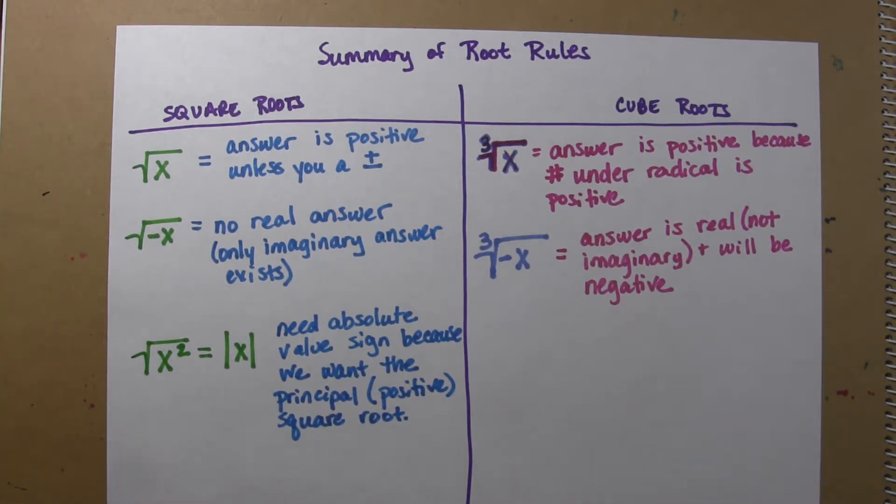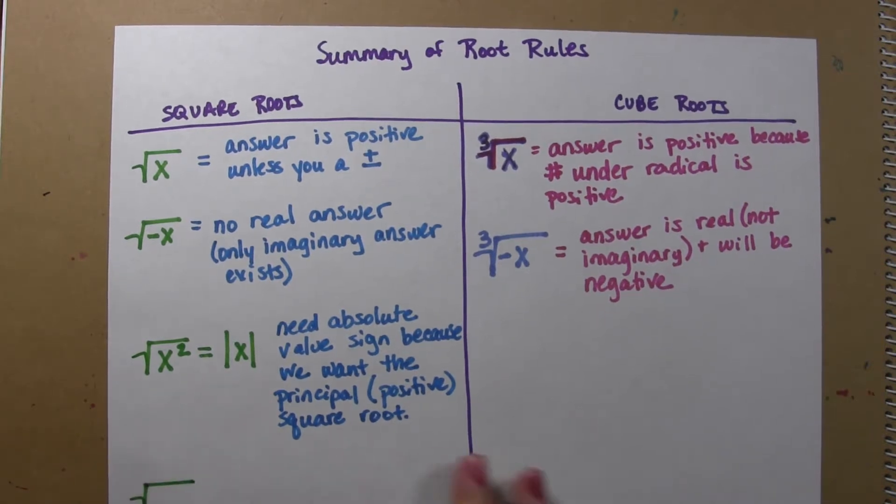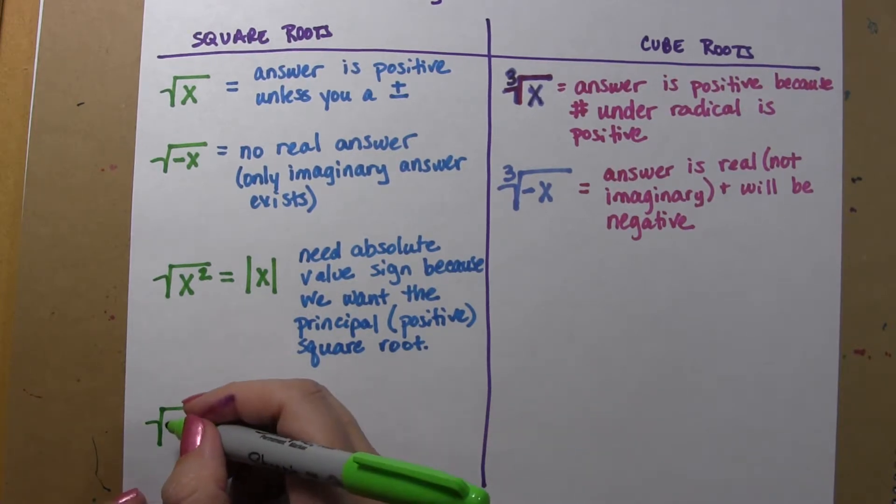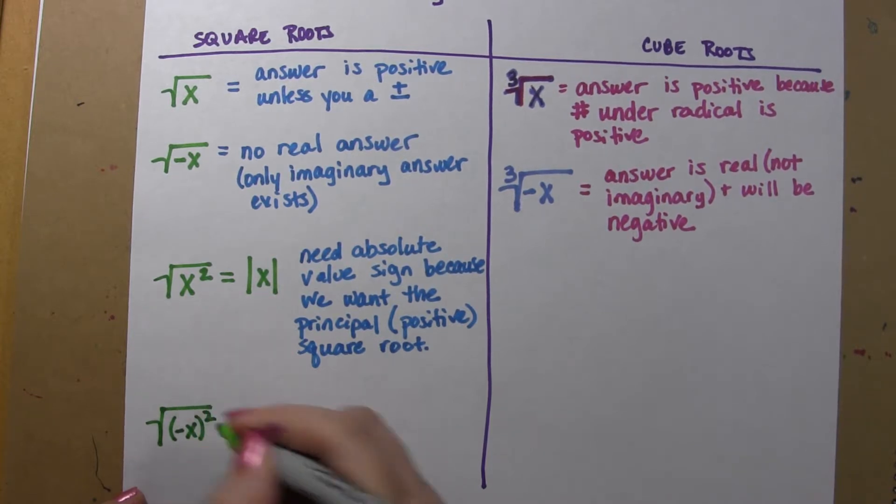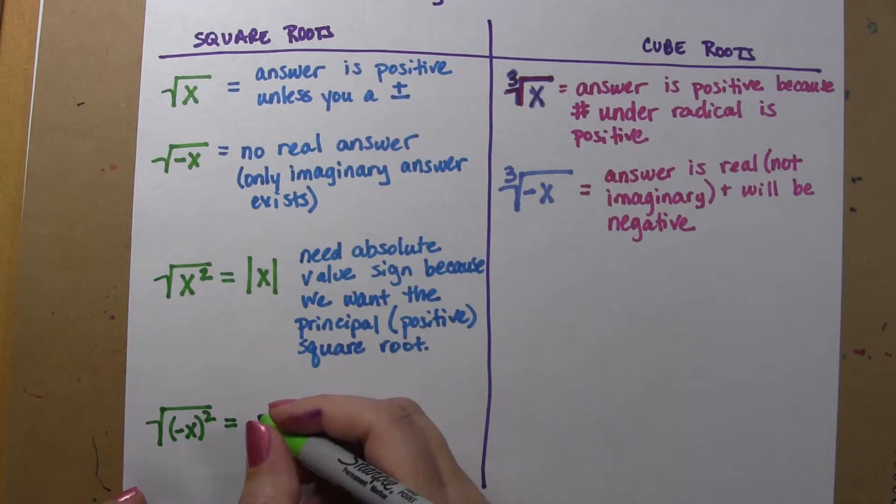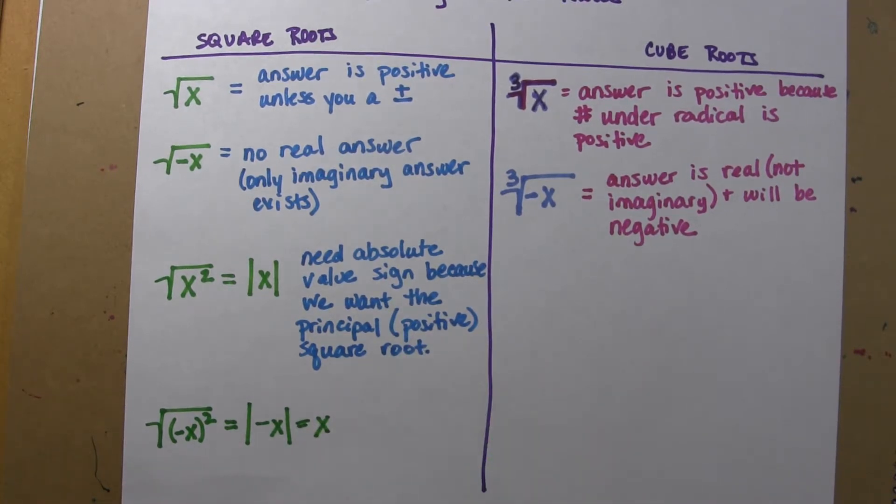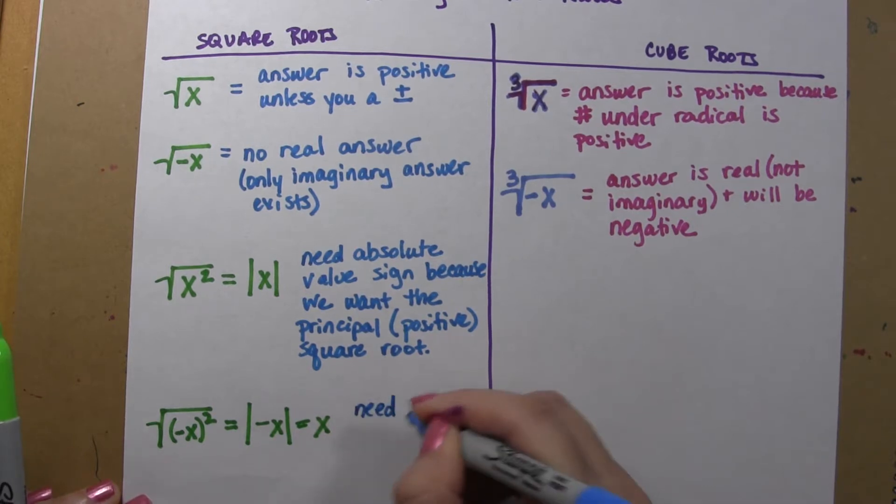And if I had a square root of a negative x squared, right, then that is going to be the absolute value of negative x, which is still going to be x. So we still need the absolute value sign.